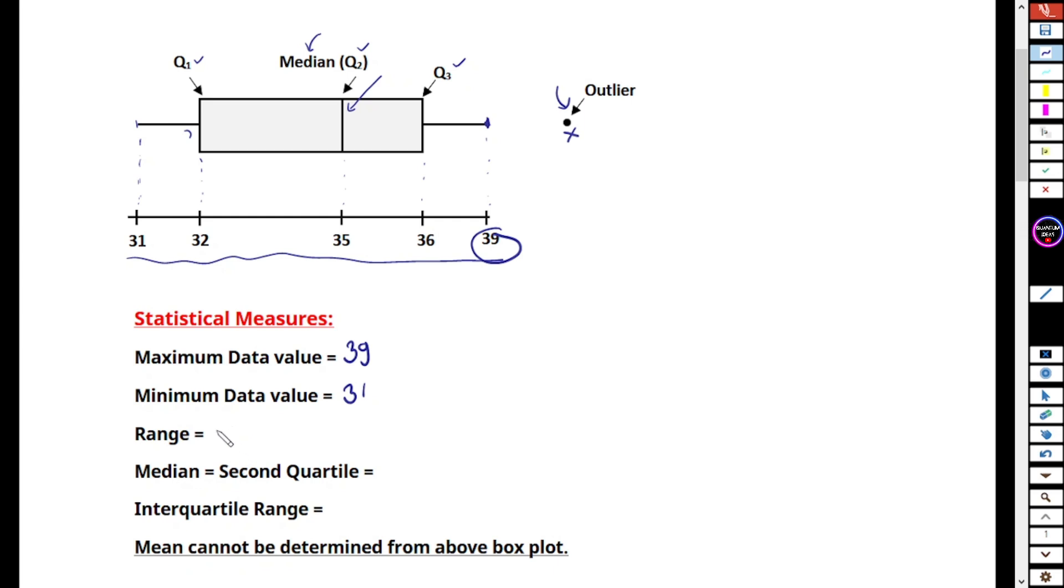So what is the range? Range is the maximum minus minimum data, so 39 minus 31, so this is basically 8, it is the range. To calculate median, median is basically second quartile, and median is the position of this vertical line. You can see here down below that is 35, so our median is 35.